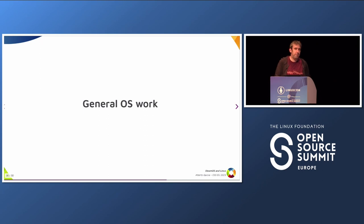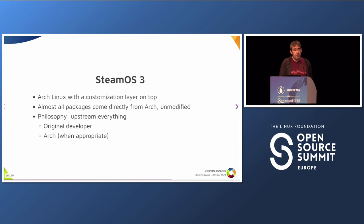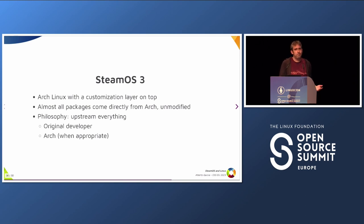Apart from graphics and kernel, there's the general OS work. A big part is the regular work of maintaining a distro — making sure all components work together, managing the OS update system, boot process, and many other things. SteamOS is Arch Linux with a customization layer on top. Almost all packages are unmodified and come directly from Arch — they're not even rebuilt, so they're the same binaries. The philosophy of Arch Linux is to keep everything as close to upstream as possible, avoiding downstream patches unless strictly necessary. In SteamOS, maintaining a downstream fork just adds overhead, so when there's a problem it's fixed directly upstream.